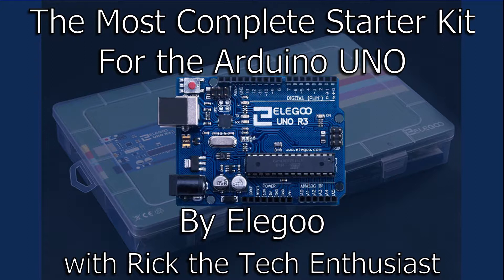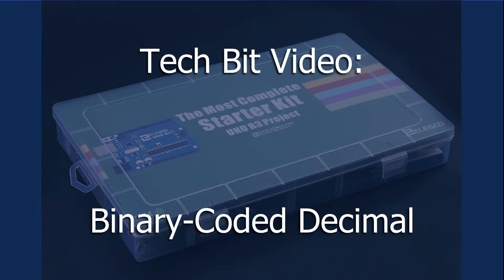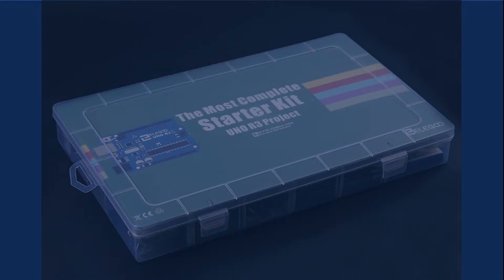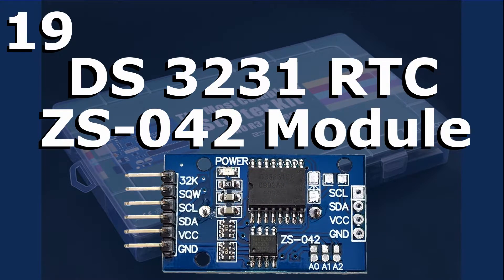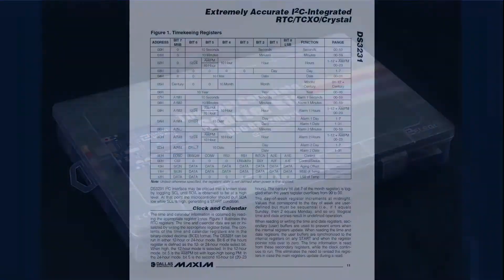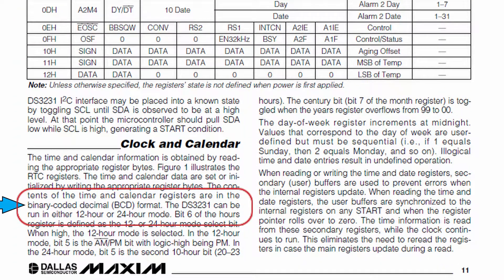Greetings YouTubers, I'm Rick the Tech Enthusiast here with a little TechBit video on the binary coded decimal. In the previous lesson, I mentioned that the DS3231 RTC's time and date values are encoded in a binary coded decimal format, and if you're reading the bytes directly from the chip, it's nice to know what this means.